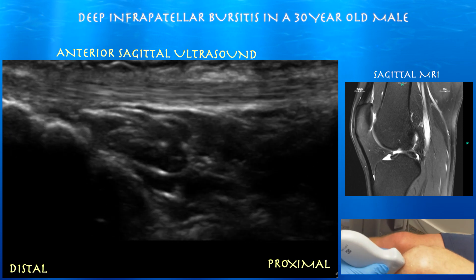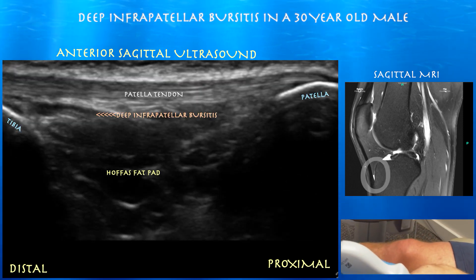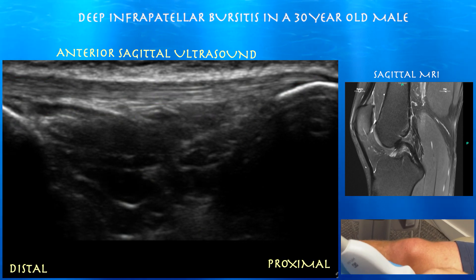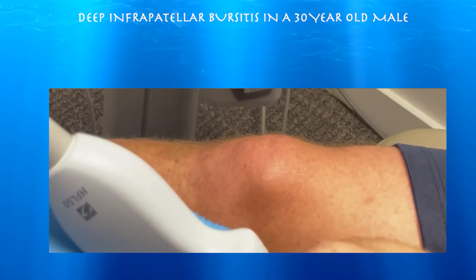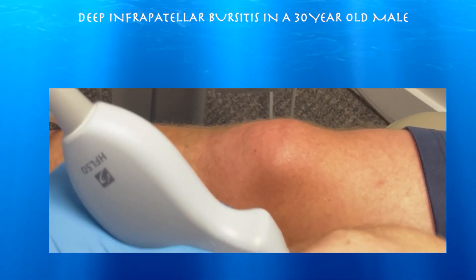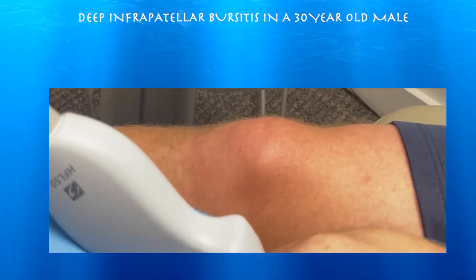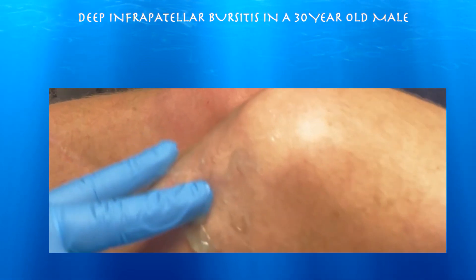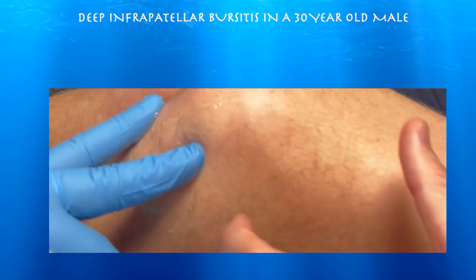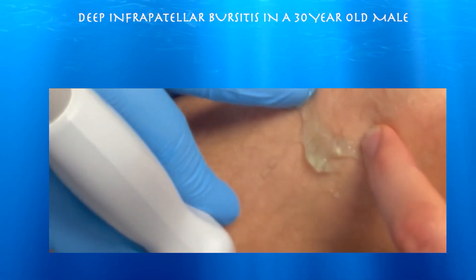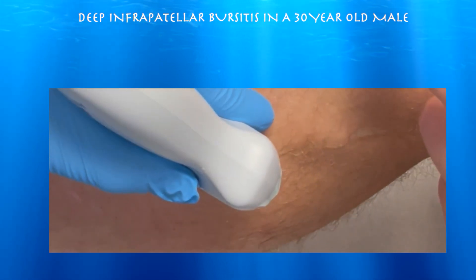Here we are at 11:04. We can see a little bit of fluid under the distal aspect of the patella tendon that is compressible. Is there any swelling in this region? Maybe a little bit — if you flatten it you see a little bump where you don't see a bump on the right side. Right around here — yeah, right in that region. I'm seeing fluid right over here, underneath here.